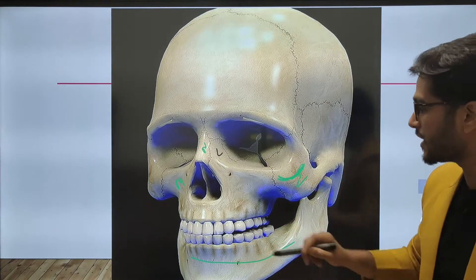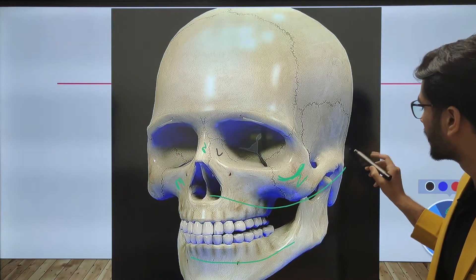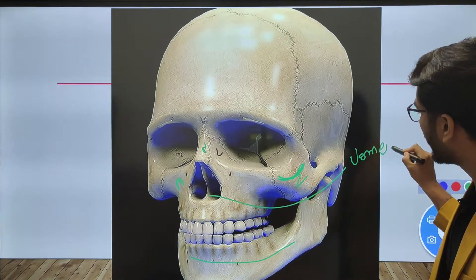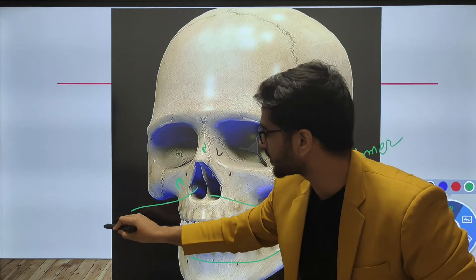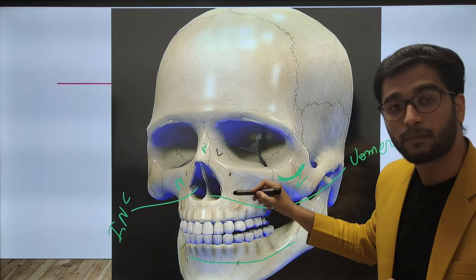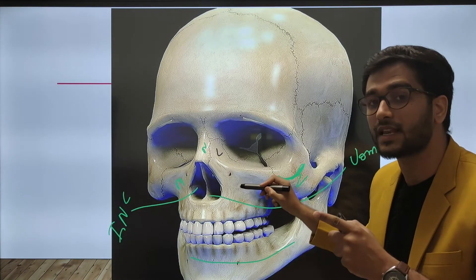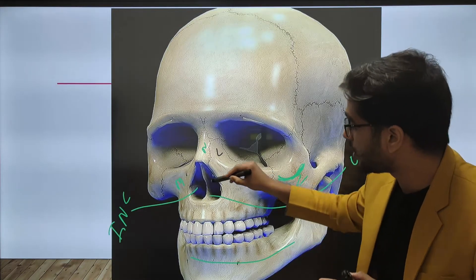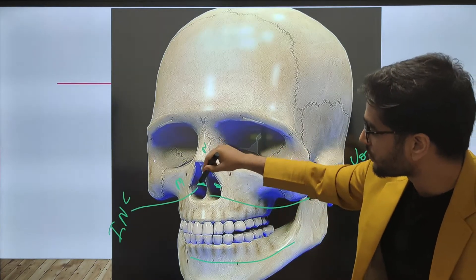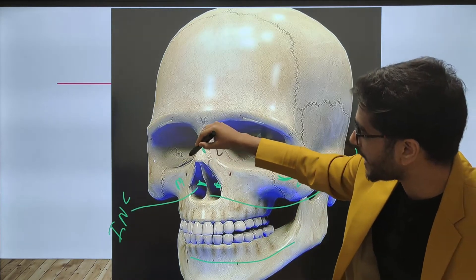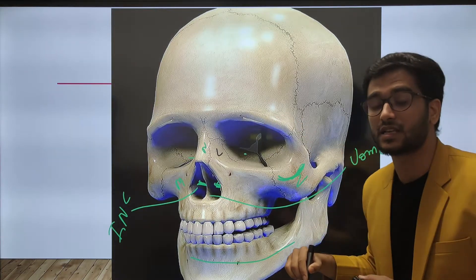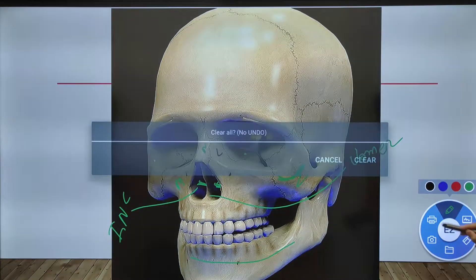The lower jaw is basically known as the mandible. The vomer bone is present here, and the bones here are the inferior nasal concha. The palatine bone is posteriorly located after the maxillas. The palatine bone can also be found when the cavity is larger.